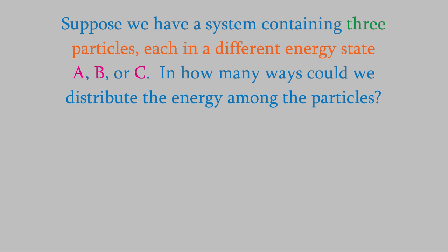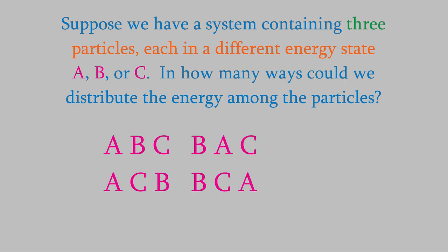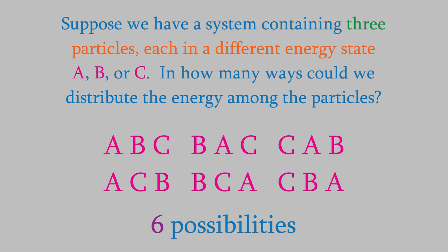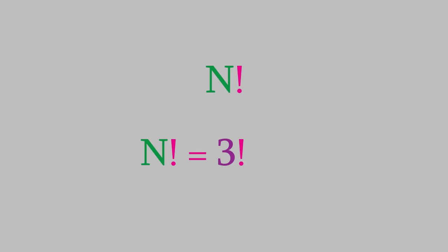Suppose the first molecule has energy A — then the second molecule could have energies B or C, and the third molecule will have the remaining energy. The first molecule could have energy B, and the other two would have A and C in either order. And the first molecule could have energy C, with the others having A and B in either order. So altogether there are six different ways to distribute the energy. This reflects a simple formula from probability theory: n different objects can be arranged in n factorial different ways. With three molecules, that is 3 factorial, which equals six.